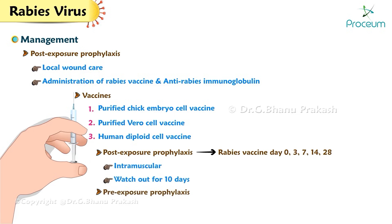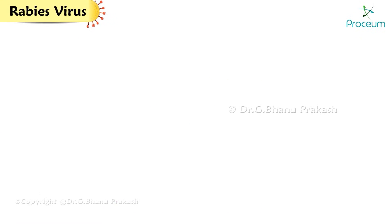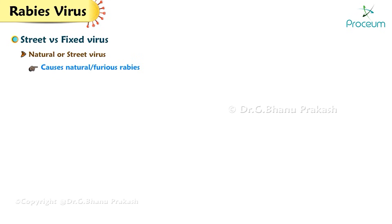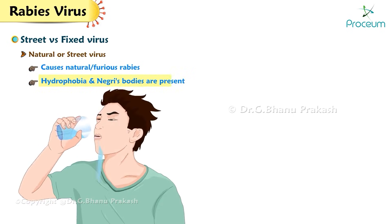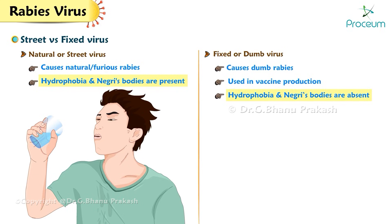Pre-exposure prophylaxis is given on days 0, 7, 21, and 28, and is indicated for veterinarians and researchers. Street virus (natural virus) causes furious rabies; in this type, hydrophobia and Negri bodies are present. Fixed or dumb virus causes dumb rabies and is used in vaccine production; in this type, hydrophobia and Negri bodies are absent.